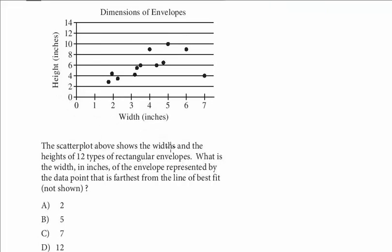The scatter plot above shows the widths and heights of 12 types of rectangular envelopes. What is the width in inches of the envelope represented by the data point that is farthest from the line of best fit?